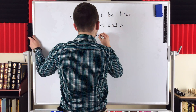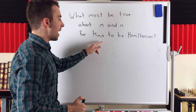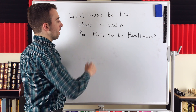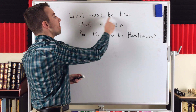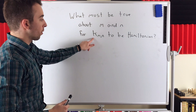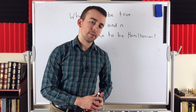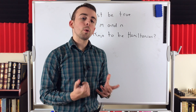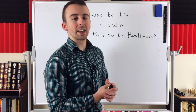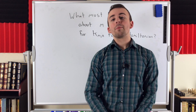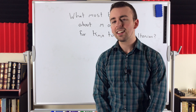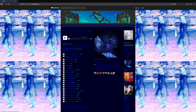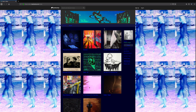Here's an example exercise: K_{m,n} is the complete bipartite graph where one partite set has M vertices and the other has N vertices. What must be true about M and N for this complete bipartite graph to be Hamiltonian? Let me know your answer and justification in the comments — you can even write a proof. I'll leave an explanation in the description. I hope this video helped you understand Hamiltonian cycles, graphs, and paths. Thank you for watching — subscribe for the swankiest math lessons on the internet.